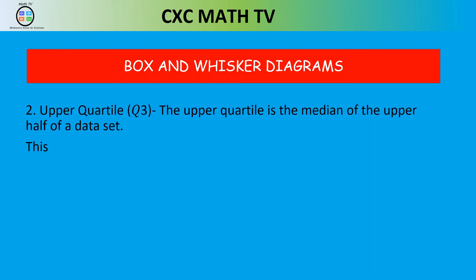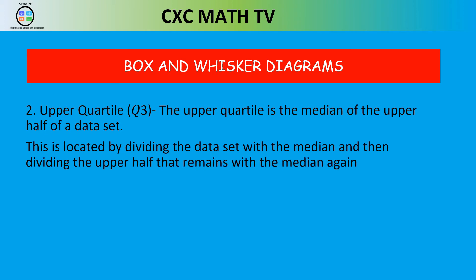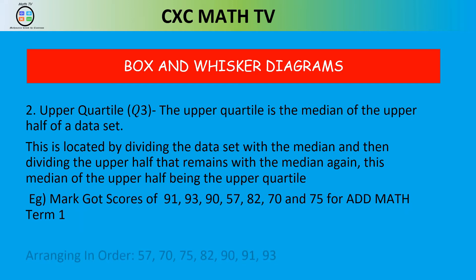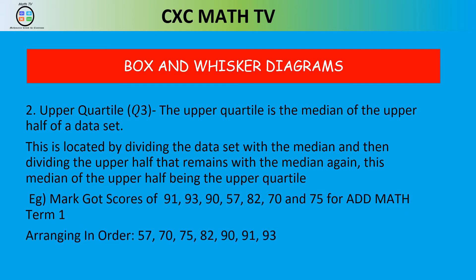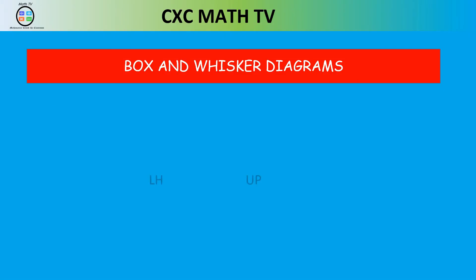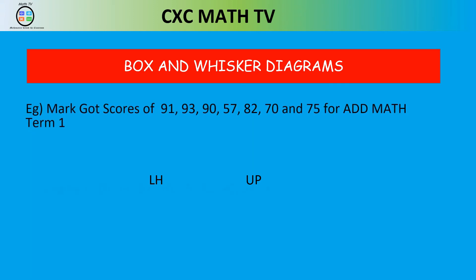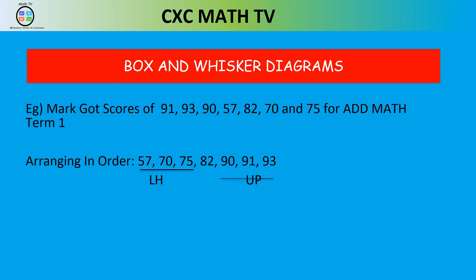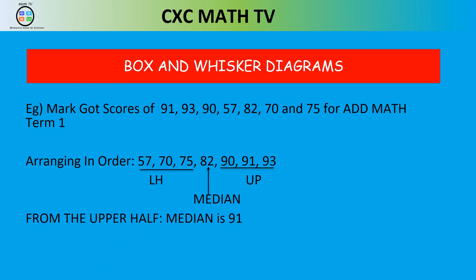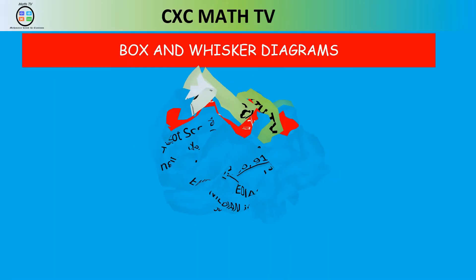The upper quartile is the median of the upper half of the data set. Arrange the data in ascending order: 57, 70, 75, 82, 90, 91, 93. The upper half is 90, 91, 93 and the lower half is 57, 70, 75. The median is 82, the median of the upper half is 91 — that's the upper quartile, Q3.